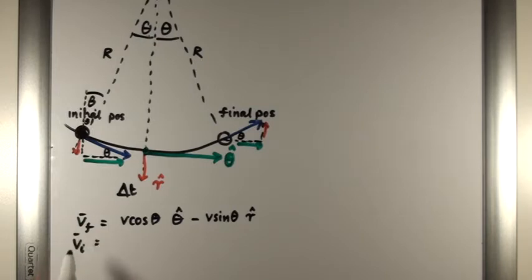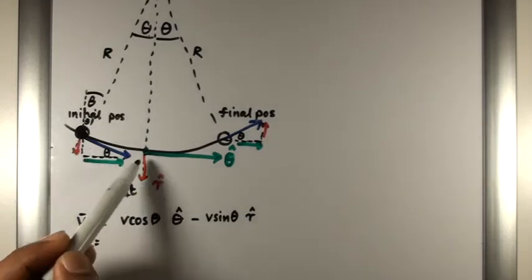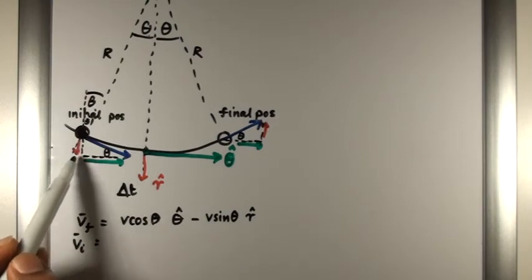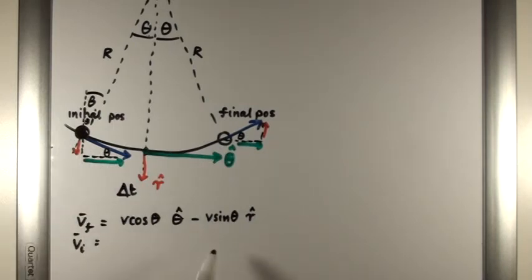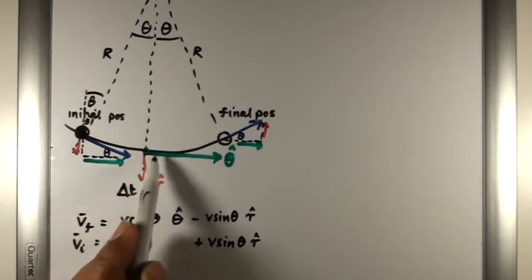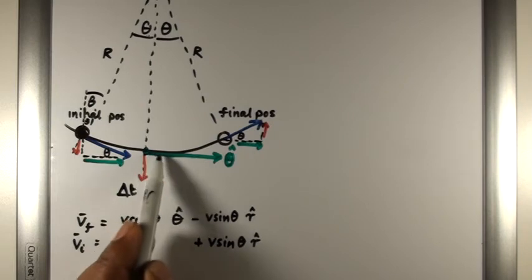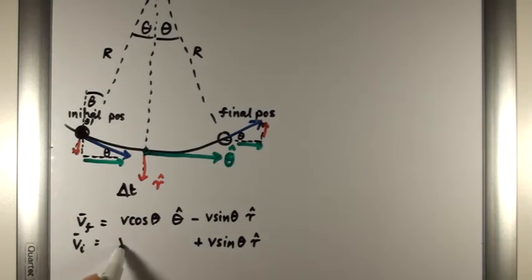Let's do the same for the initial velocity. The initial velocity has a radial component that is pointing outwards from the center, and so that component here must be positive. And the component in this direction, in the tangential direction, is going to be V cosine theta.